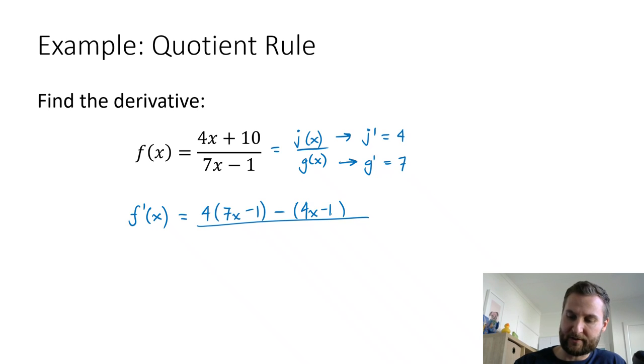So 4x plus 10 stays the same. The derivative of the bottom is g', so that's 7. And then on the bottom there's no derivative, so you have to write this down again, and then square it.